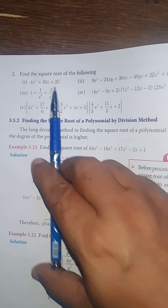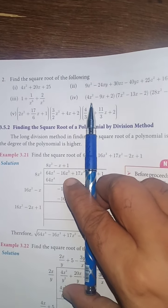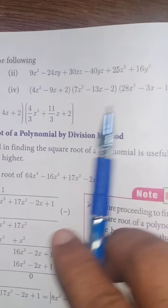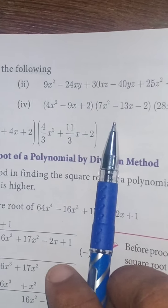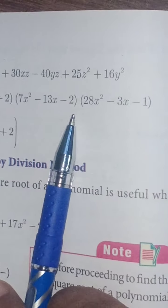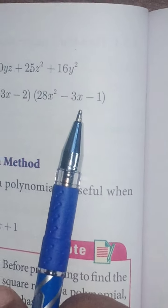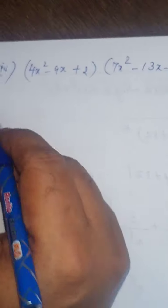Find the square root of this is the question: 4x squared minus 9x plus 2; 7x squared minus 13x minus 2; 28x squared minus 3x minus 1. Here is the question. First, we can factorize one by one.